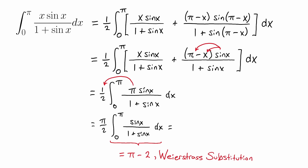With that integral out of the way, we get the value of our integral as pi over two times pi minus two. And that is it.